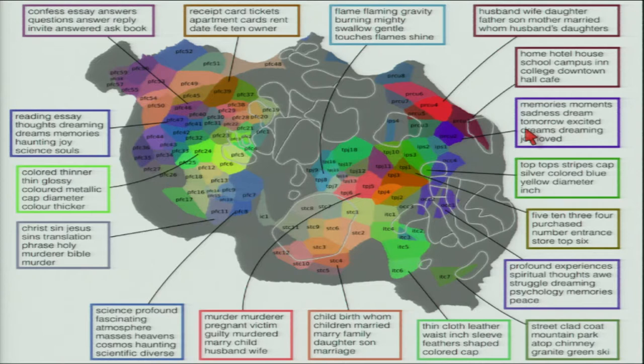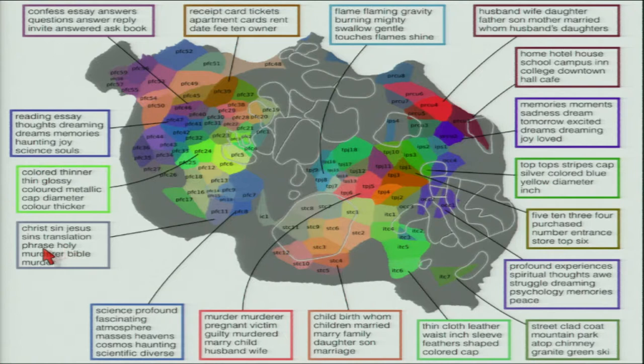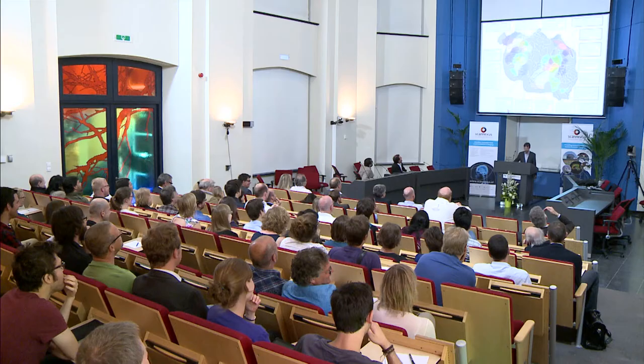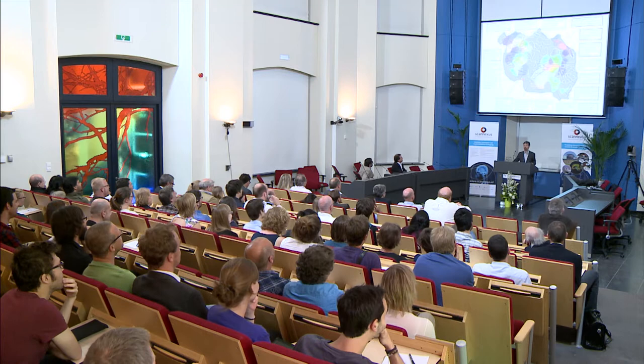We also see areas tuned for numbers — 5, 10, 3, 4, purchased — and for material properties — thin cloth, leather, waist, inch, sleeve. Deep in the temporal lobe there is a religious-related area responding to Christ, sin, Jesus, holy, and one immediately next to it is a science-related area responding to science, profound, fascinating, atmosphere, masses, heavens, cosmos. The religion-related area is slightly larger than the science-related area, but there are actually two areas selective for religious concepts and two for scientific concepts, plus several selective for numbers and many for families, social drama, and social relationships.